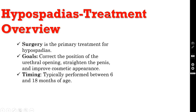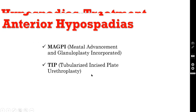Coming to the treatment, surgery is the primary treatment for hypospadias. The goals are to correct the position of the urethral opening, straighten the penis, and improve the cosmetic appearance as well. Typically, surgery should be performed between 6 and 18 months of age.